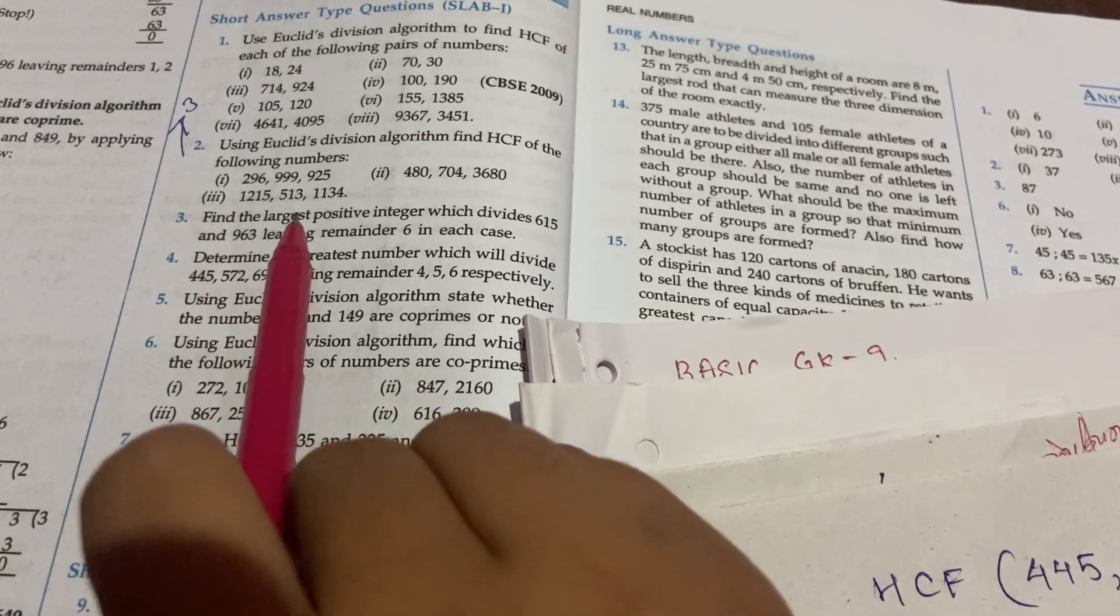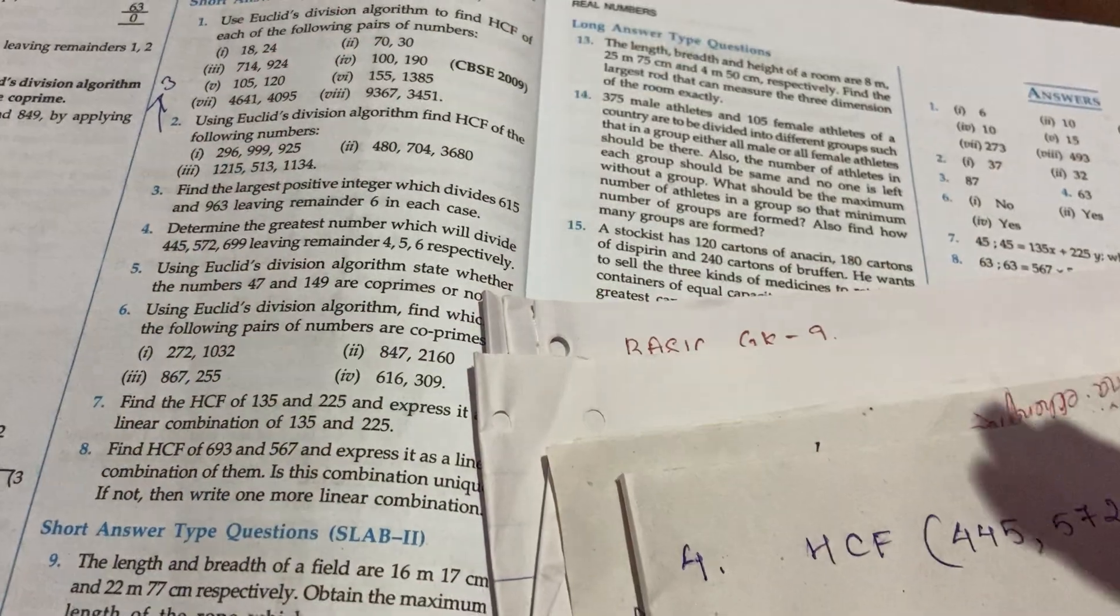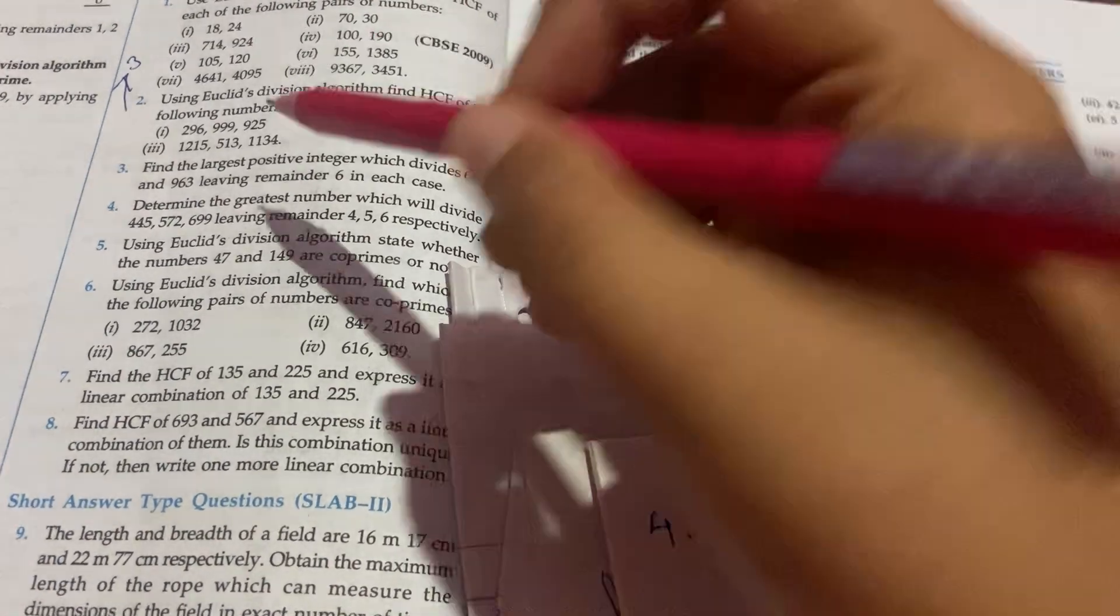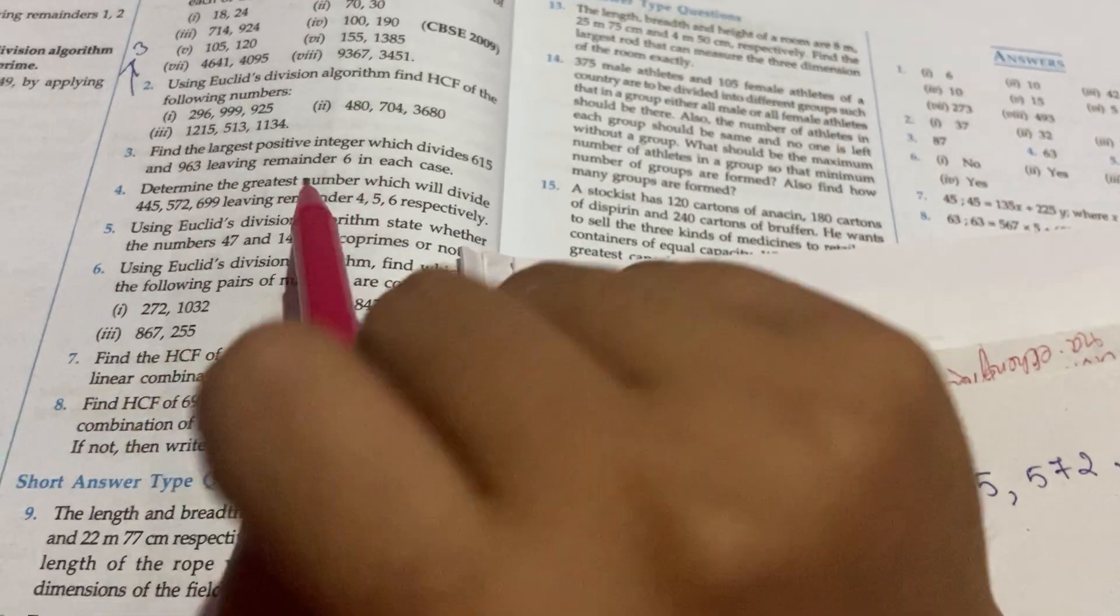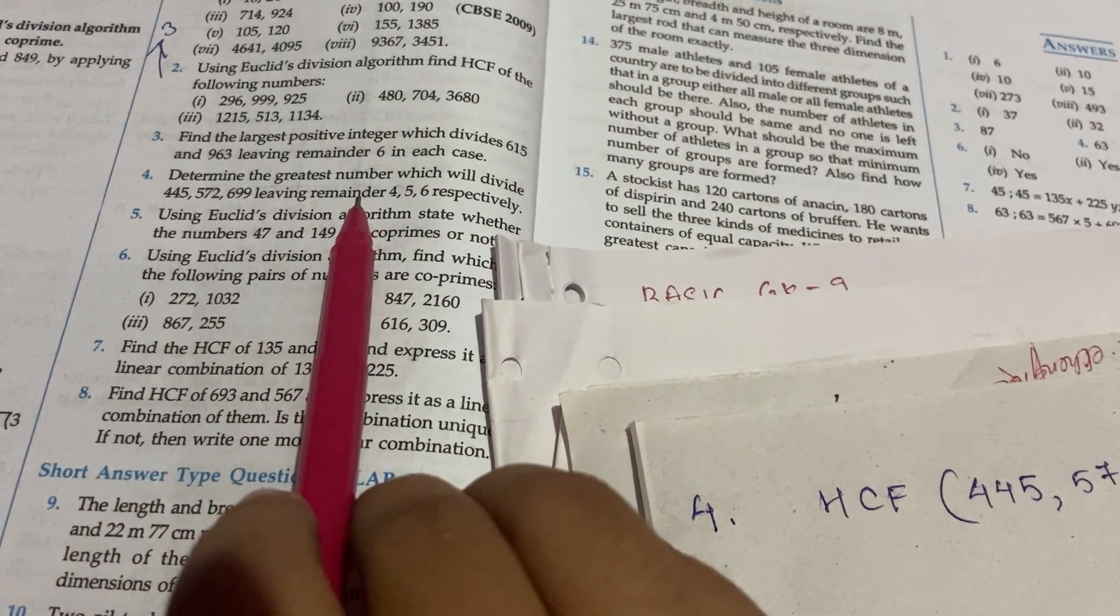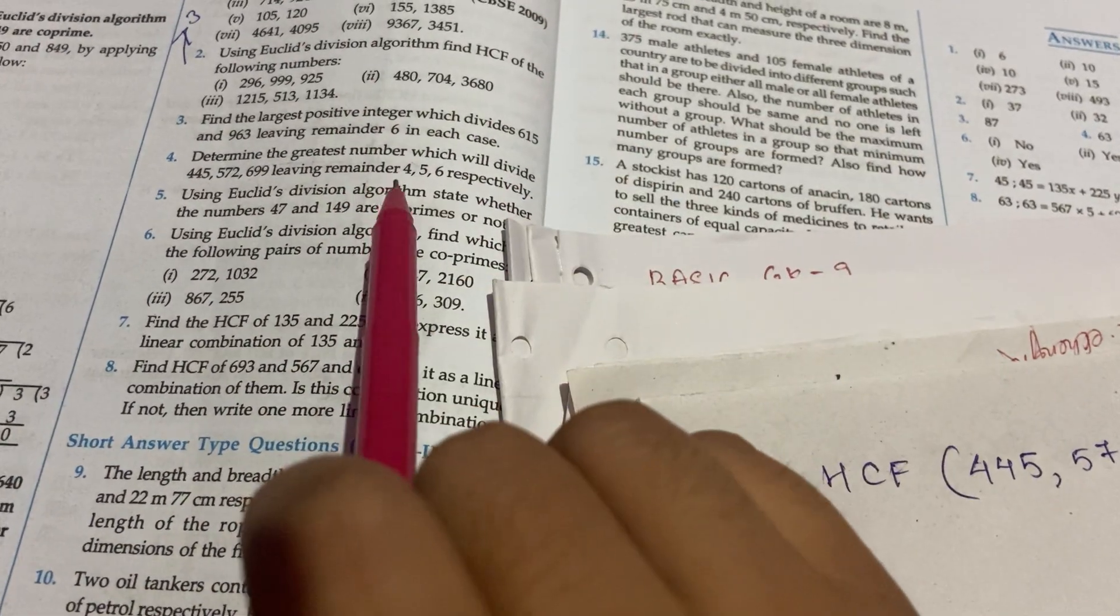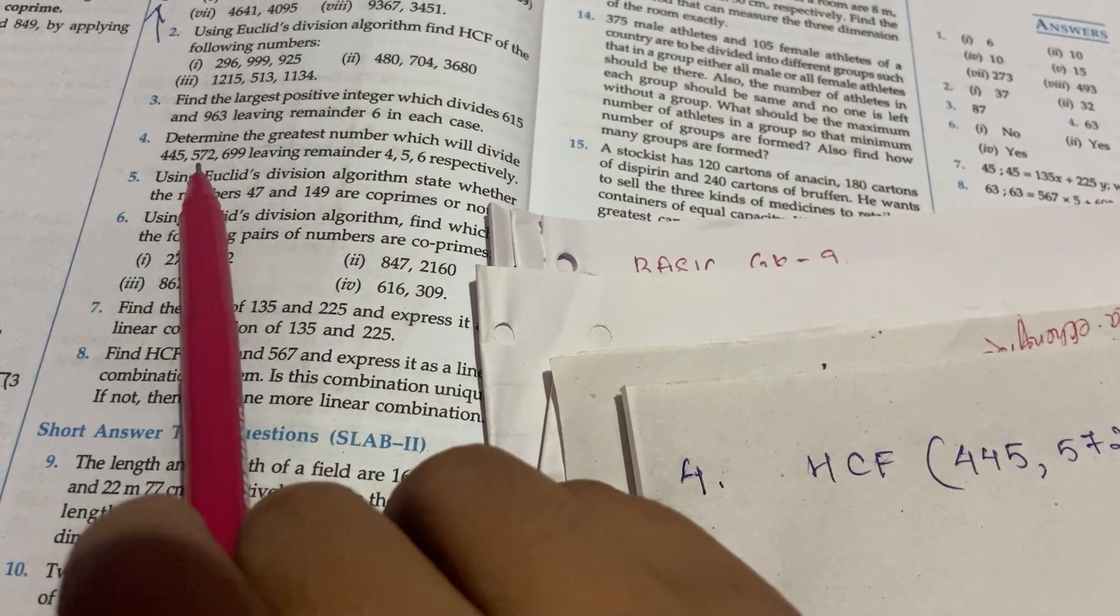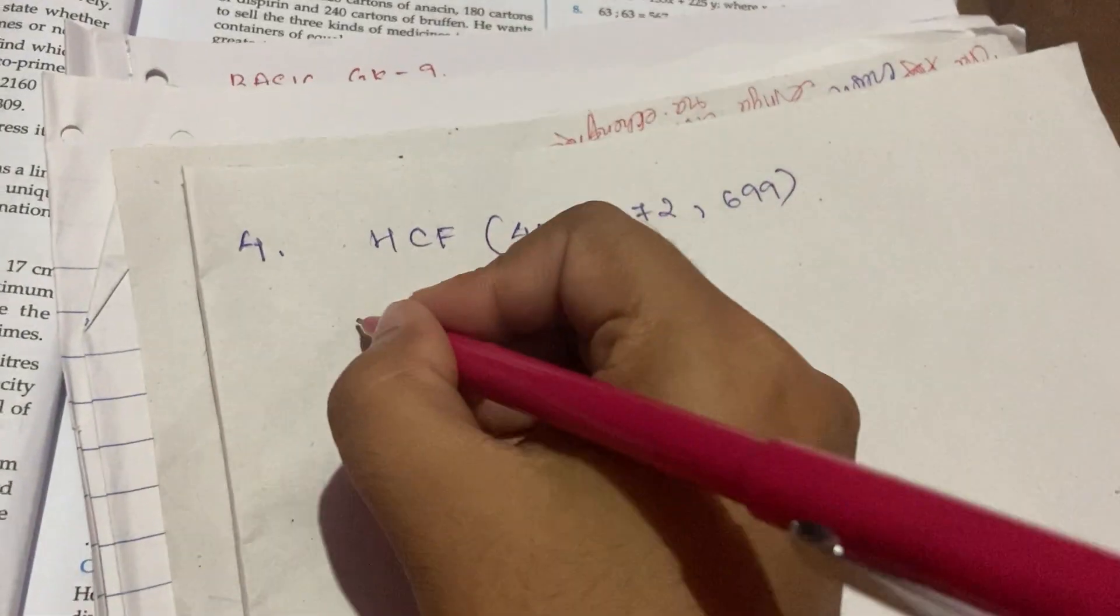There is question number 3: find the largest possible integer which divides leaving remainder. If you have the remaining remainder, then the remaining remainder is 6. The greatest number which will divide leaving remainder 6. And remainder 3, remainder 6, and 6 minus 6, and divide. 445 remainder 4, 572 remainder 5, 699 remainder 5.